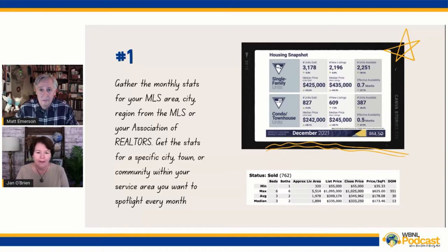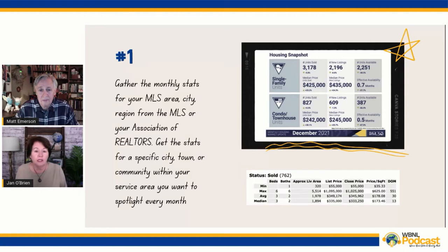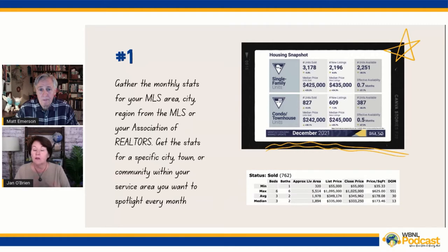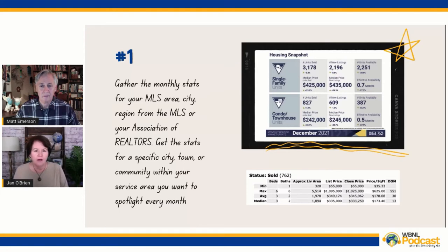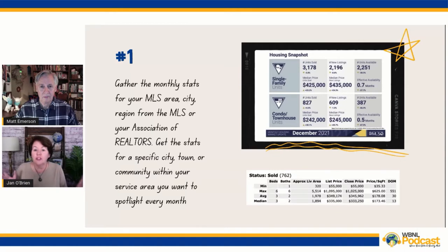There's a screenshot here of the housing snapshot — a report that Las Vegas Realtors does. I have the same thing for Florida Realtors. These are the key stats I want. For single family and condos, you can decide if you're going to report on both. I like to focus on single family. I have things like units sold, the median sales price, and how that compares year over year or month over month. For example, 3,178 homes were sold single family in the Las Vegas area, and the median sales price in December was $425,000 — up about 23%.